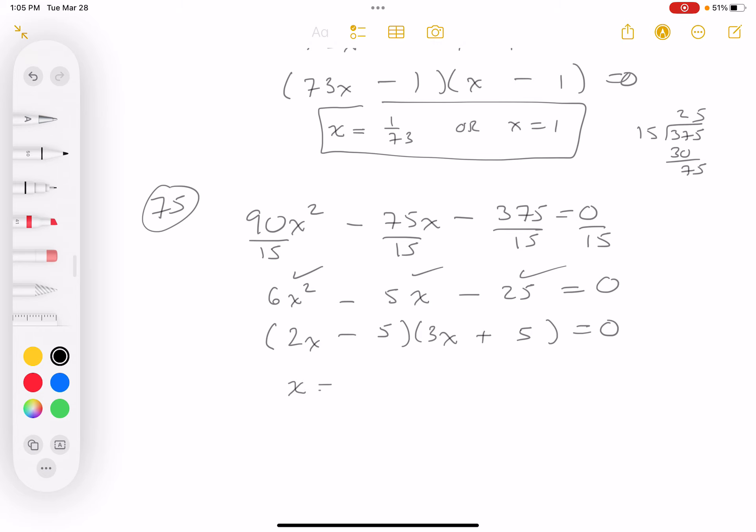What do you get over here? Again, I'm using a zero product rule. The first factor, which is 2x minus 5, becomes 0 when x is 5 halves. Or, the second factor, which is 3x plus 5, becomes 0 when x is equal to minus 5 thirds.